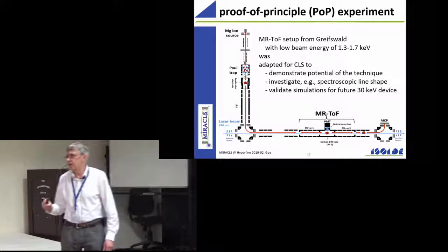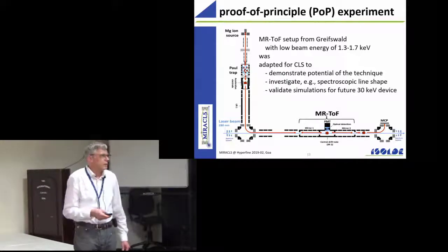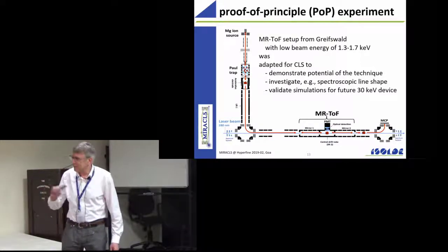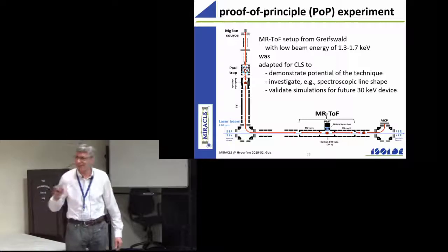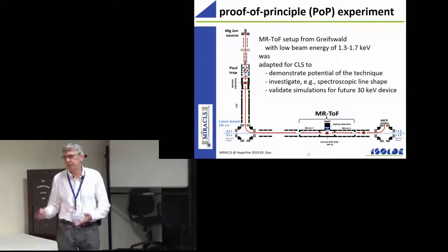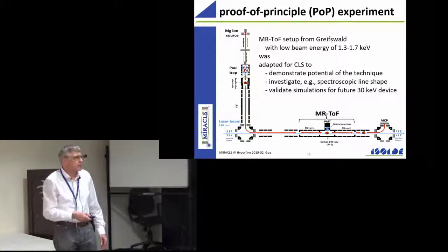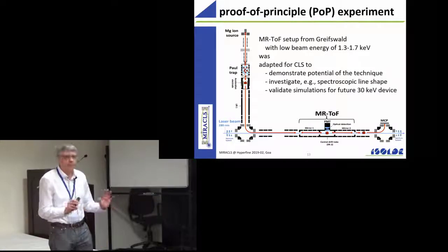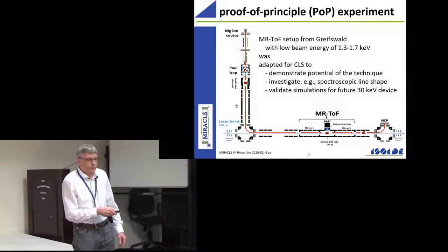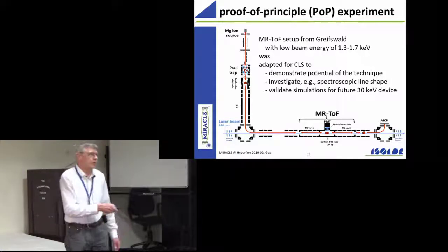I should have said one more thing. This morning we already heard about CRIS, where you do an ion detection which is very efficient but which has some disadvantages. You heard that you need a stepwise excitation, so many steps. Here we have just, in the easy cases, at least one laser. And here we do actually a photon counting.